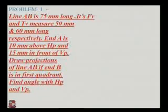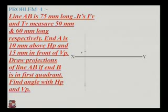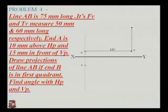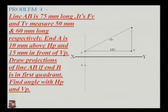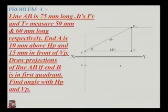Example number four: the line is 75 mm long. End point A is 10 mm above HP and 15 mm in front of VP. Draw the location of A-dash above the XY line and A below it. In this problem, the front view and top view are given as 15 mm and 60 mm long respectively — A-dash to B1-dash is the length of the top view and A to B1 is the length of the front view. We will continue this example in the further lecture.